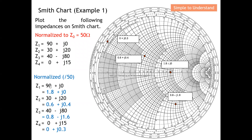So all the points are divided by 50. For example, 90 divided by 50 gives 1.8; 30 divided by 50 is 0.6; 20 divided by 50 is 0.4. So I have all these 4 points normalized to 50 ohms, and now I'm ready to plot all these 4 points onto the Smith chart.